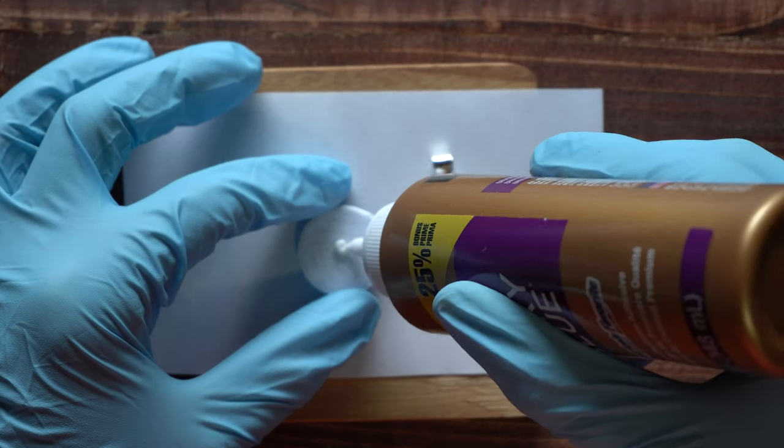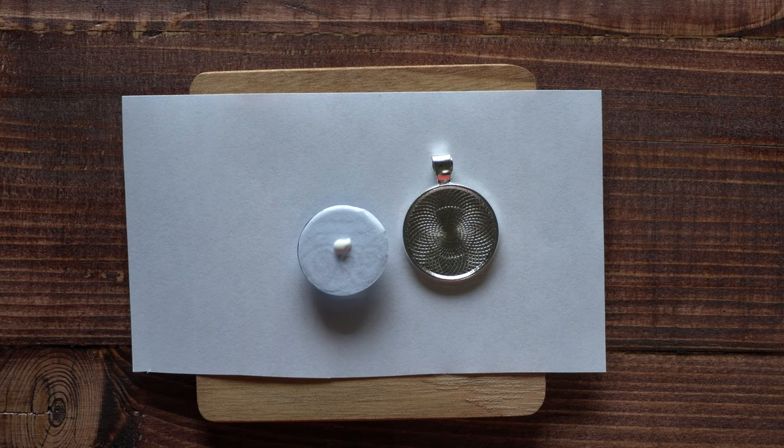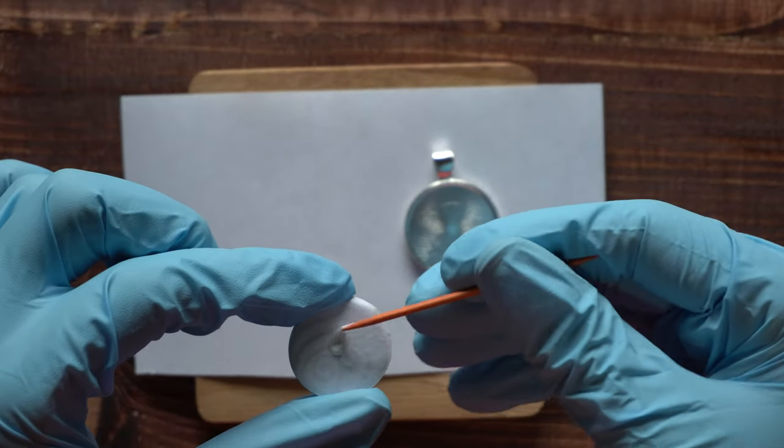Next, you're going to add a dab of glue to the back of the paper. Use the toothpick to spread the glue around so there's a thin layer across the entire backside.